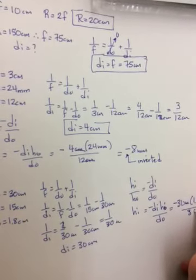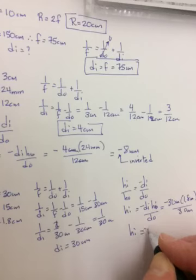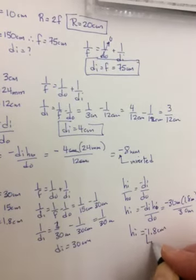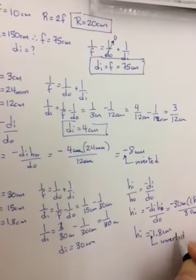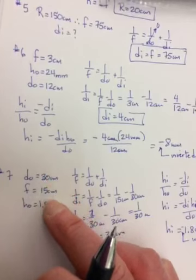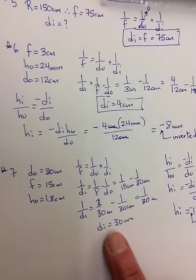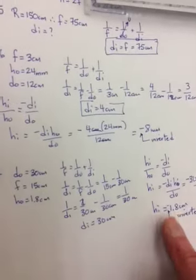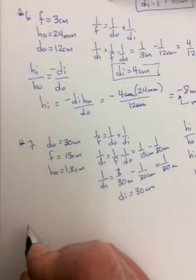And remember, negative means inverted. Now, did you have to do all that? Maybe not if you realized that the object was placed at C, two times the focal length. And that means the image should end up at C. And it should end up being the same size. So really, we just proved case number two there.